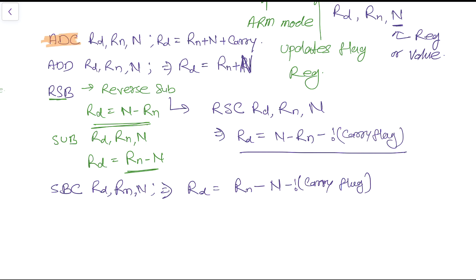So we have discussed six types of arithmetic instructions: ADD, ADC (add with carry), RSB (reverse subtract), RSC (reverse subtract with carry), SUB (subtract), and SBC (subtract with carry).